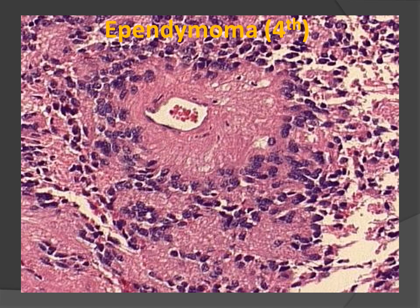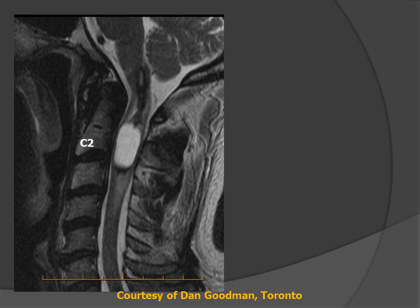Histologically, ependymomas are characterized by the formation of perivascular pseudorosettes. There is a ring of cells that has processes oriented in a radial fashion towards the capillary in the center.